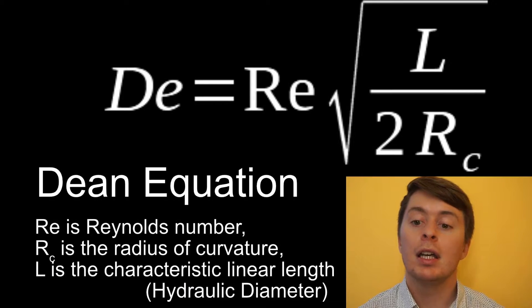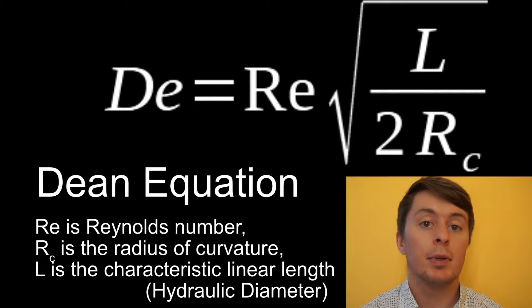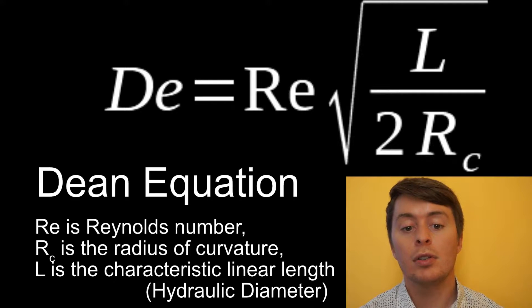A simple calculation can be done producing the Dean number. The Dean number indicates whether the vortexes will form in the secondary flow perpendicular to bulk flow and the stability of said vortexes. Essentially, values between 75 to 200 should produce stable vortexes.